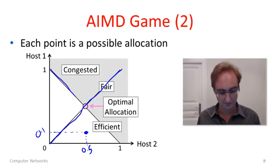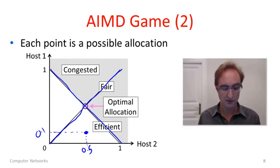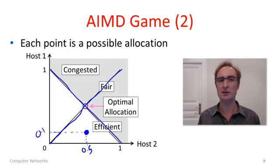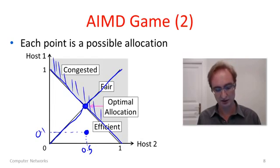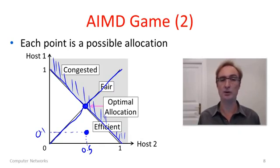The other key line is the efficiency line, where Host1 and Host2 values sum to 1 unit — X plus Y equals 1. Since 1 is the total allocation, if their bandwidth together sums to 1, they're using all of the network capacity and the network is operating efficiently. Below that line they add up to less, leaving capacity on the table. The intersection of the fairness and efficiency lines is the optimal point — both fair and efficient. The plane beyond the efficiency line is congestion; you can't sustain any point there because you're sending more traffic into the network than it can handle.